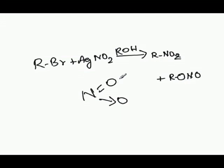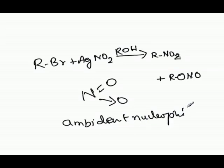Therefore, this acts as an ambidentate nucleophile. That is why you are getting different products: one is nitro and another one is nitrito.